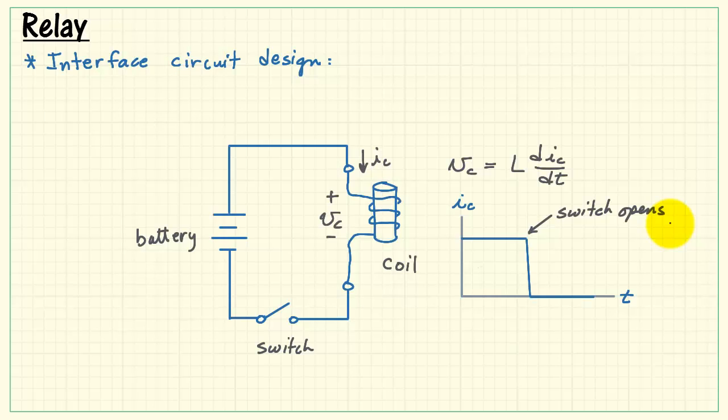When the switch is closed, we have a constant current, but when you open the switch, you're trying to force the current down to zero. That means you have a very large negative slope. Since the voltage is proportional to the time rate of change of the current, that means this large negative slope is going to show up as a huge voltage spike in the negative direction.